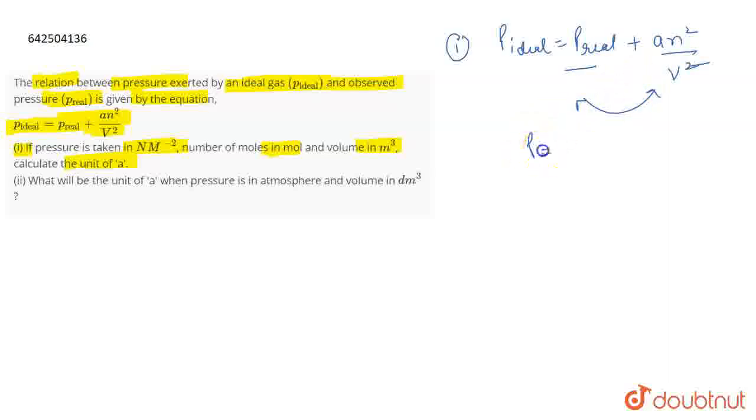It means that the units of pressure are equal to the units of A n squared by V squared. So this means that A becomes equal to P V squared divided by n squared.